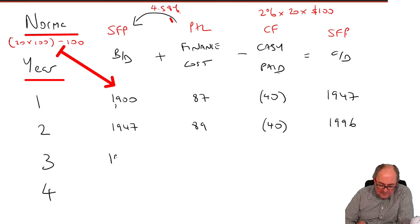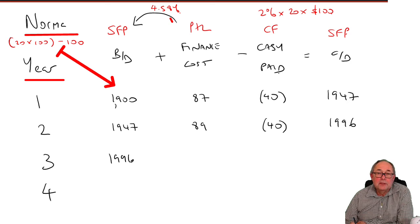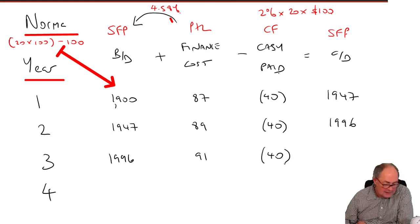Third year, 1996, 4.58%, 91. Less 40. I think that's 2047.